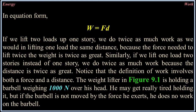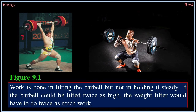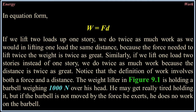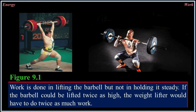If we lift two loads up one story, we do twice as much work as lifting one load the same distance because the force needed to lift twice the weight is twice as great. Similarly, if we lift one load two stories instead of one, we do twice as much work because the distance is twice as great. Notice that the definition of work involves both a force and a distance. A weight lifter holding a 1000-newton barbell over his head — if the barbell is not moved by the force he exerts, he does no work on the barbell. Work is done in lifting the barbell, but not in holding it steady. If the barbell could be lifted twice as high, the weight lifter would have to do twice as much work.